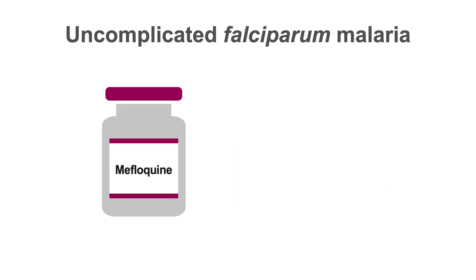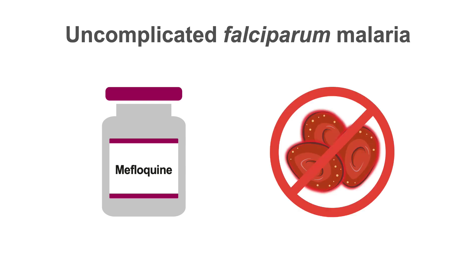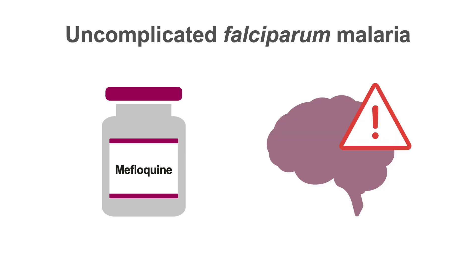The fourth option is mefloquine. Mefloquine acts as a blood schizonticide; however, its exact mechanism of action is not known. Mefloquine is generally reserved for cases where the other options cannot be used, because when used in therapeutic doses — in contrast to preventive doses — rare, severe neuropsychiatric reactions can occur.